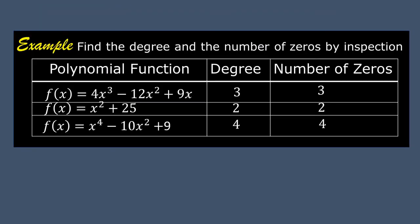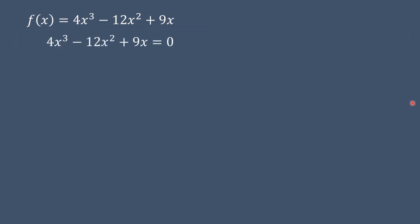Let us verify the zeros of the first polynomial function, f(x) = 4x³ - 12x² + 9x. We said that the number of zeros is equal to 3. Set the polynomial equal to 0: 4x³ - 12x² + 9x = 0. Let us factor the left side. There is a common factor, which is x. Factor x out.